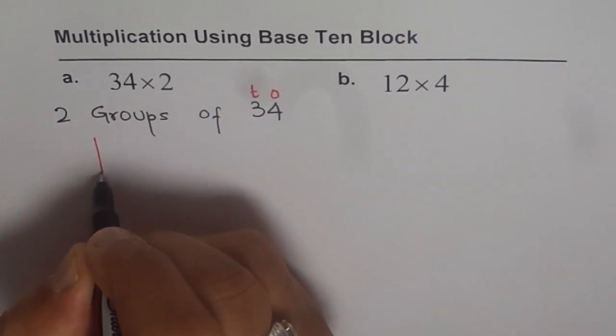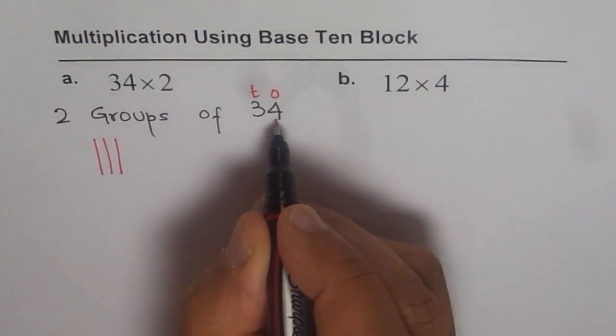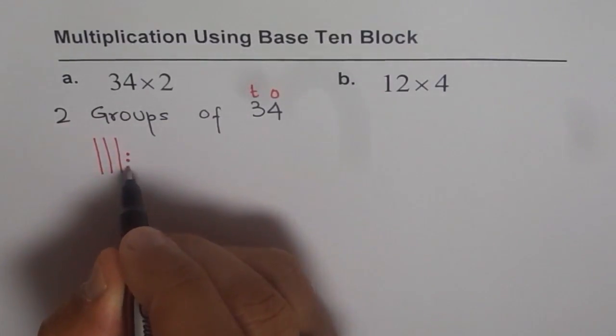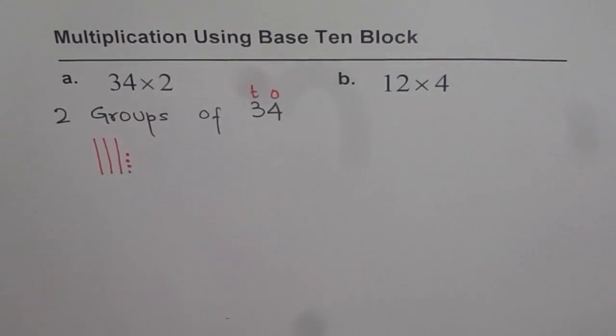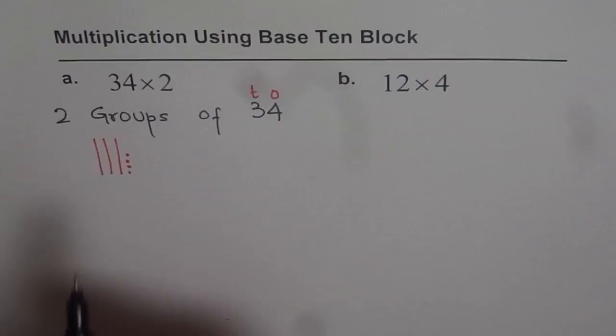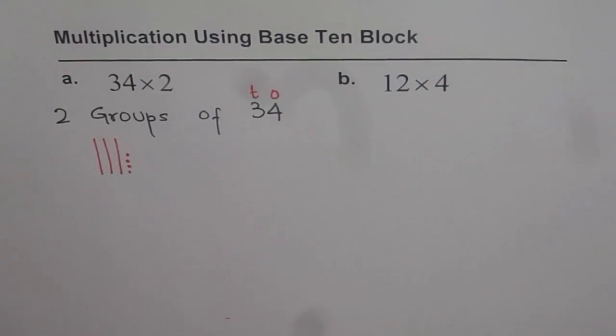So let us, this is my 10. So 1 ten, 2 tens, 3 tens, and 4 ones. So 1, 2, 3, 4. So that is how I make 34. 3 tens and 4 ones.